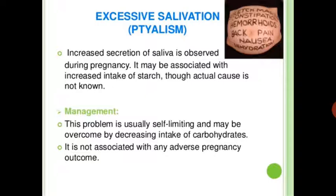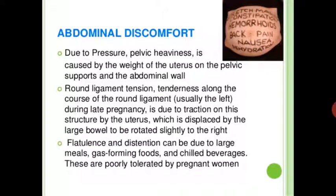Next is excessive salivation — ptyalism. Increased secretion of saliva is observed during pregnancy. It may be associated with increased intake of starch, though the actual cause is unknown. Management: this problem is usually self-limiting and may be overcome by decreasing intake of carbohydrates. It is not associated with any adverse pregnancy outcome.